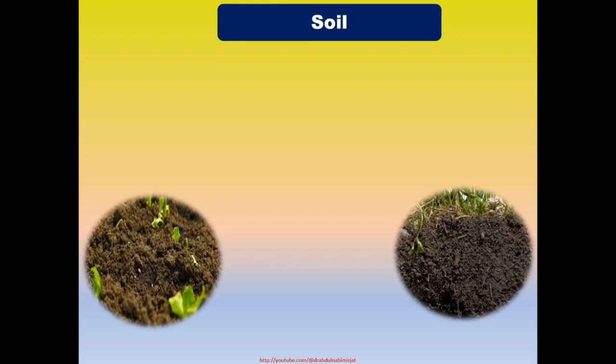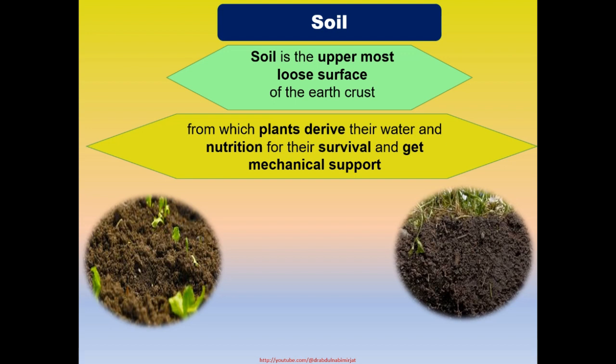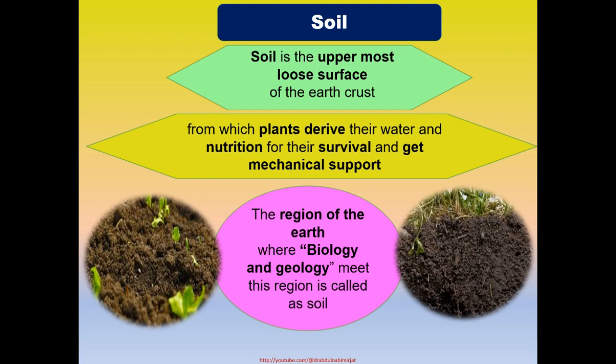Soil — how can we explain the term soil? Soil can be defined as the uppermost loose surface of the earth's crust from which plants derive their water and nutrition for their survival and get mechanical support. Soil can be defined in many ways. For example, the region of the earth where biology and geology meet — this region can also be called soil.